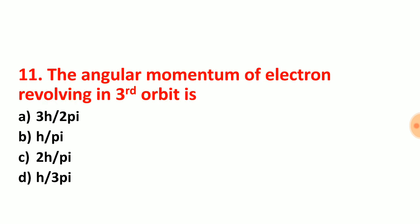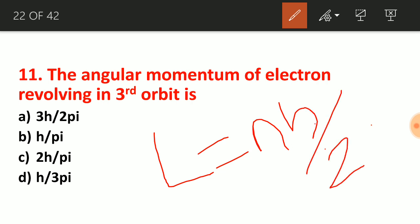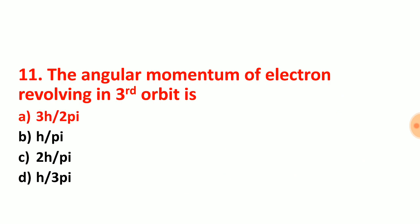Question number 11: the angular momentum of electron revolving in the third orbit. From Bohr's postulates, angular momentum is an integral multiple, given by the formula nℏ/2π, where n is the orbit number. Here the third orbit means n = 3, so the answer is 3h/2π. Option choice A is the correct answer for question number 11.